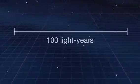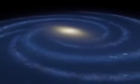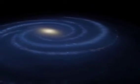100 light years means 588 trillion miles. Our Milky Way size is one lakh light years, which means 588 quadrillion miles. I think you can imagine how big it is.